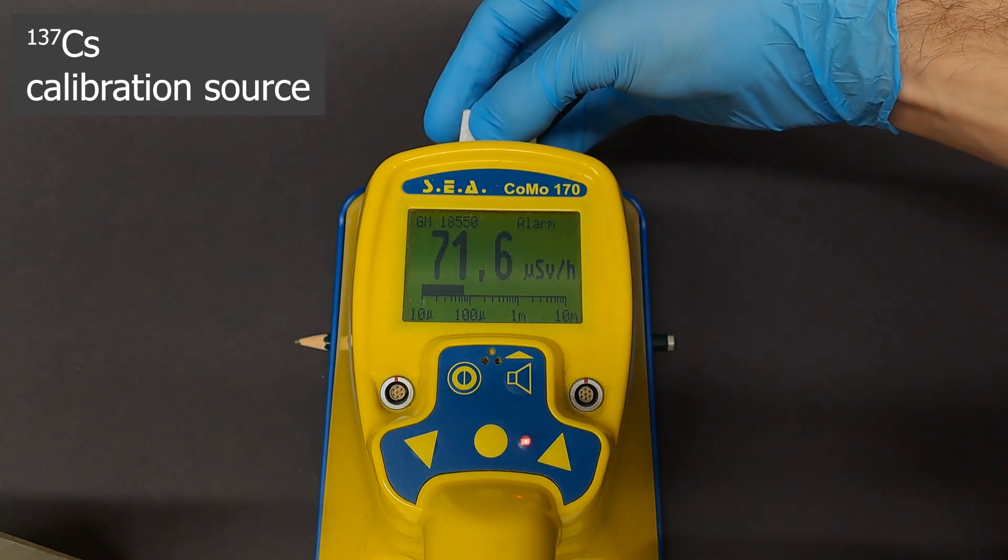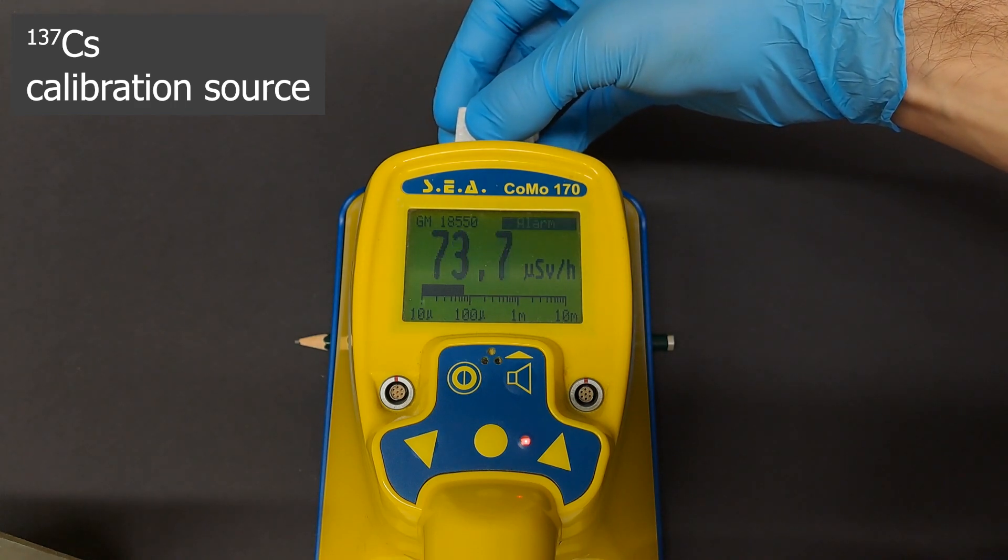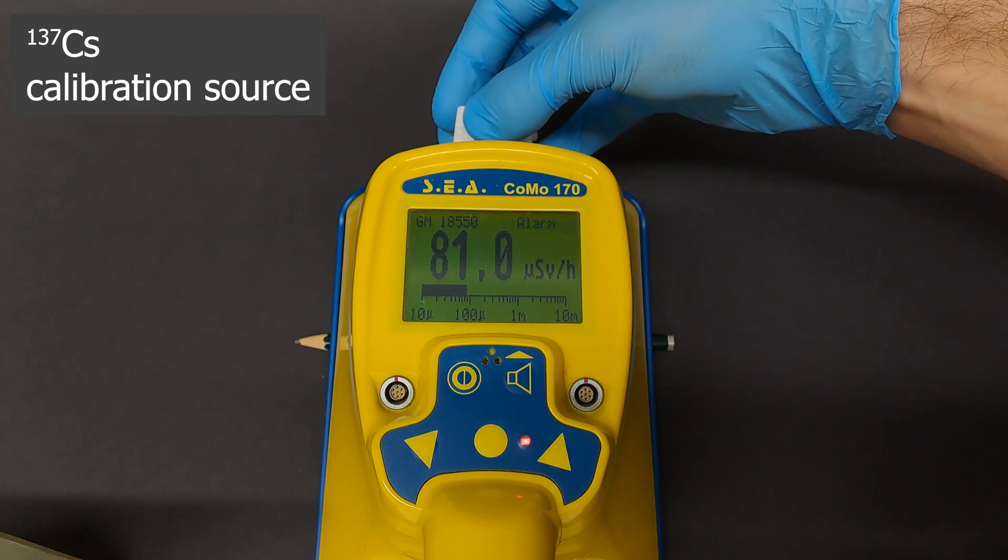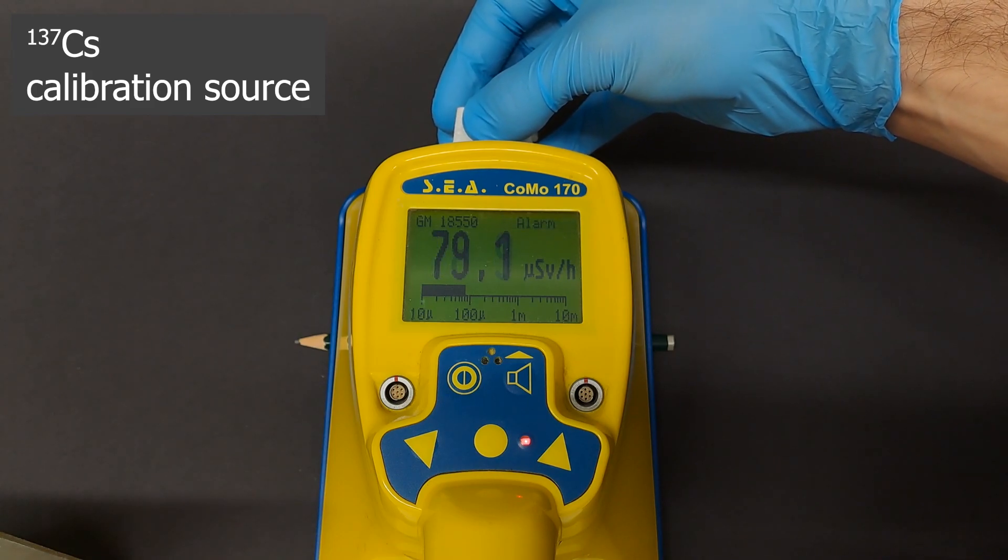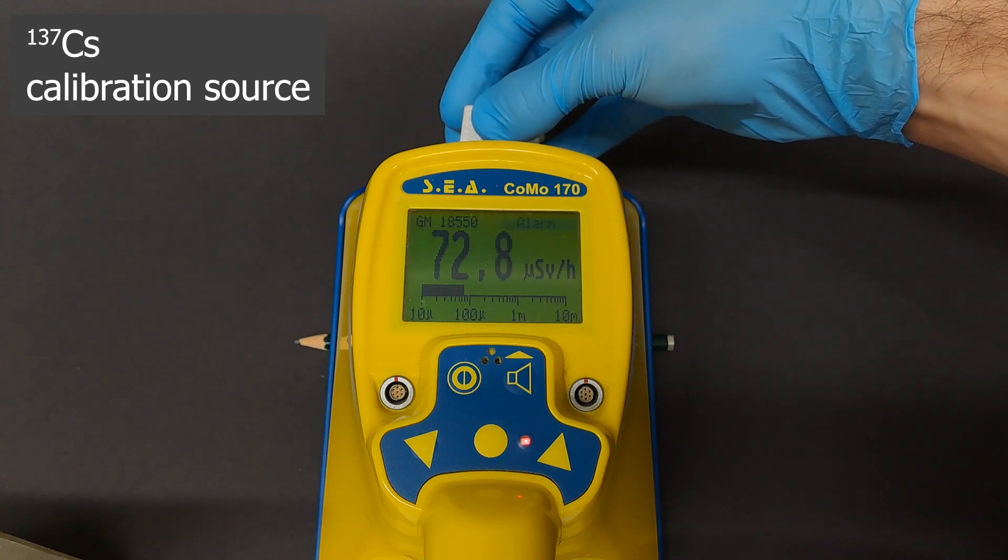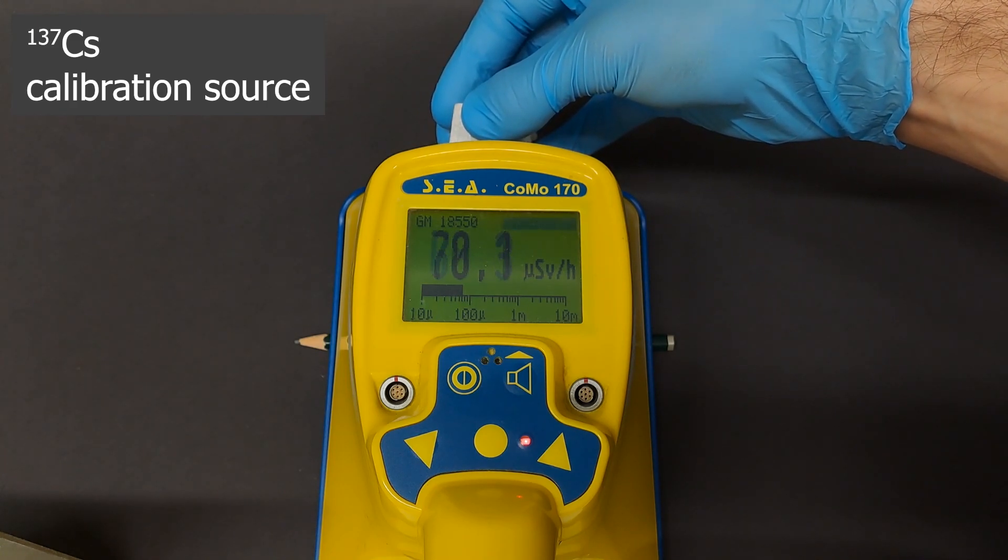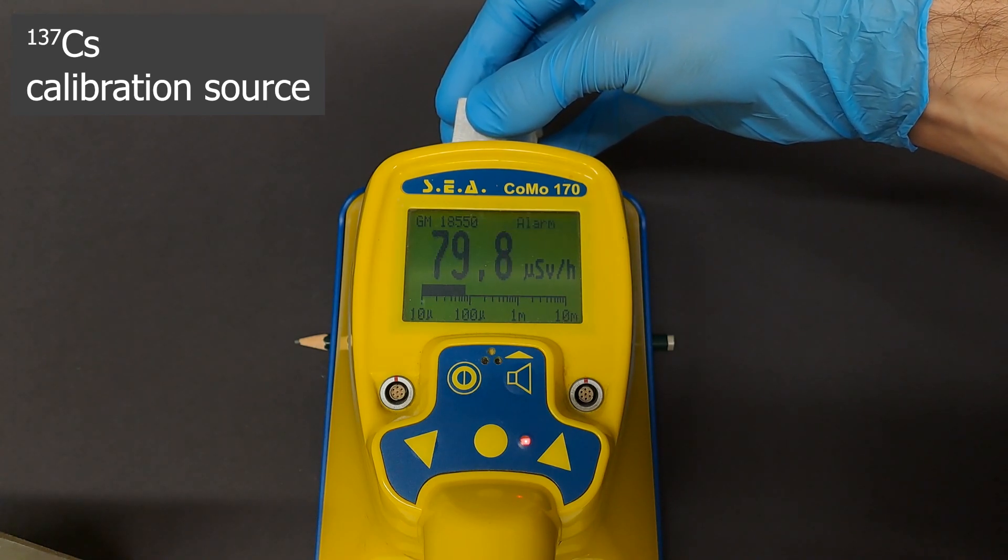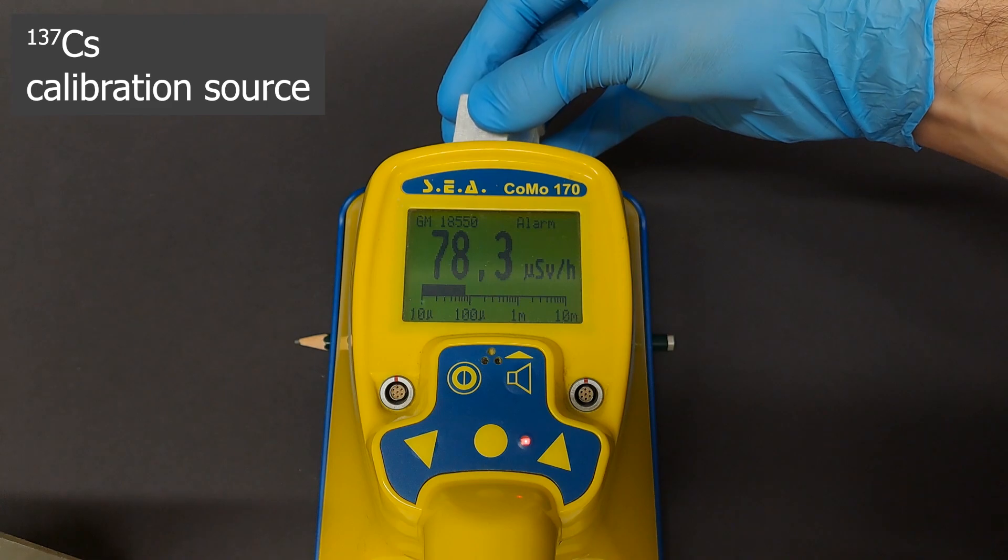Cesium-137 shows a significantly higher dose rate. To make this test as fair as possible, the samples are always held as close to the device as possible. I would assume everyone would measure things like this, even though it doesn't correspond to the actual dose rate your body would receive. But we will get to the theory behind that later. For Cesium-137, we reach a peak value of 80.8 microsieverts an hour.